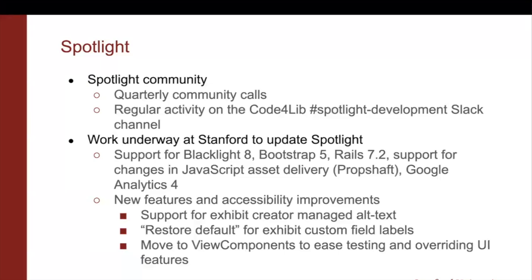Here's more detail about work going on in Spotlight, the engine that provides digital exhibit functionality. The community has started quarterly community calls again, and there's been more regular activity on the Code4Lib Spotlight development Slack channel. As part of our current work cycle at Stanford, we're working on updating Spotlight for better support for Blacklight 8, Bootstrap 5, the latest versions of Rails, and wrangling newer JavaScript asset delivery tools like Propshaft. We're also adding new features, particularly around accessibility improvements — specifically, adding support for exhibit creators to manage alt text for embedded images.